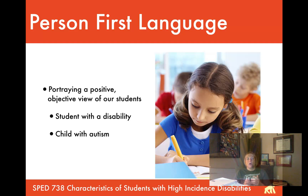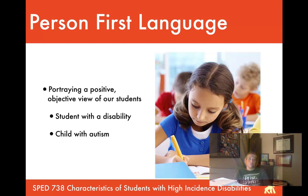Another critical component the authors mention — and they start the chapter with this — is language: how do we talk about individuals with disabilities? It's really important for all of us to be aware of and to promote in our buildings: using person-first language. Rather than identifying a child by their disability, we identify them by name first, which allows us to have a more positive, objective view of students.